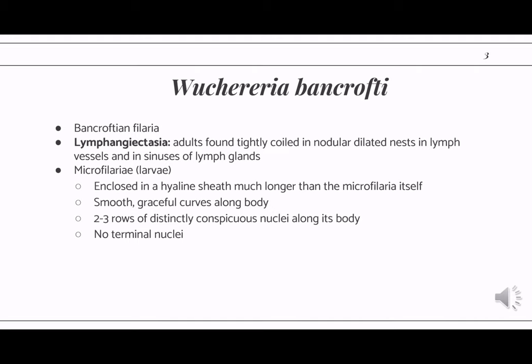Let's start with our lymphatic filarial worms. First off, we have Wuchereria bancrofti, which is much more common than Brugia malayi. Based on the name, it causes bancroftian filariasis, and the characteristic of lymphatic filariasis would be lymphangiectasia. This is caused by the coiling of the adult worms found in the lymph vessels of the infected host, causing proximal dilation of the lymph vessels.